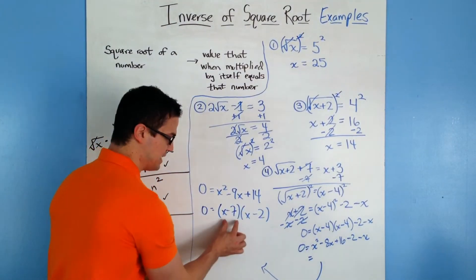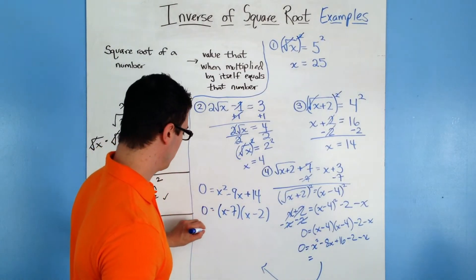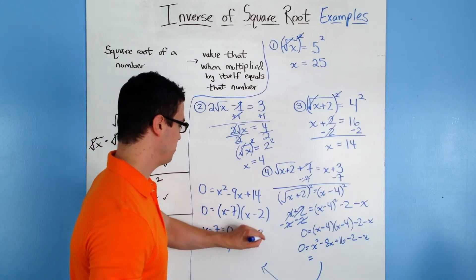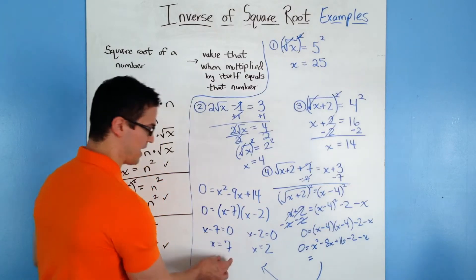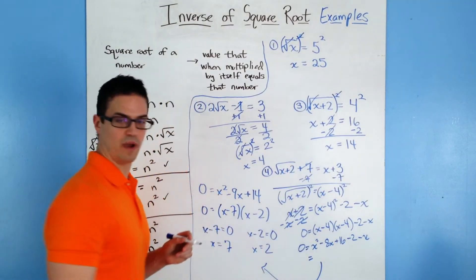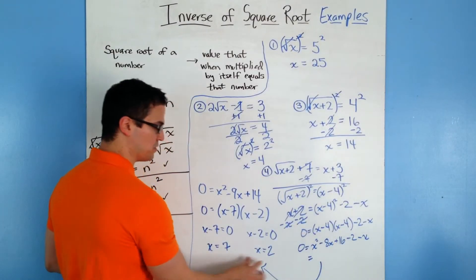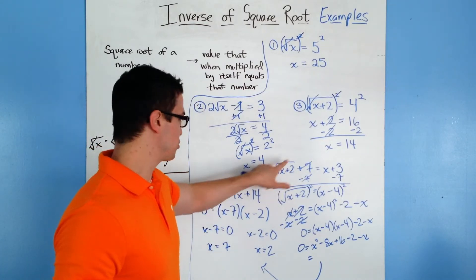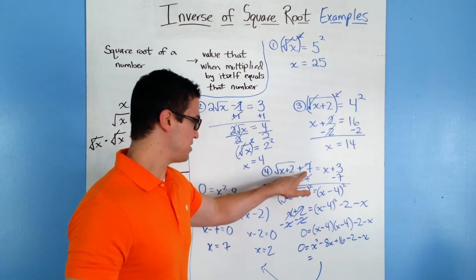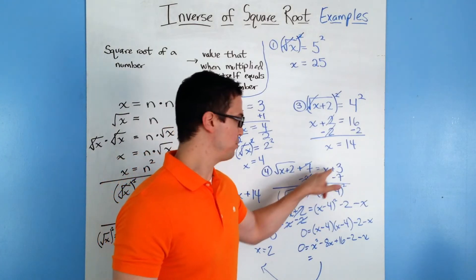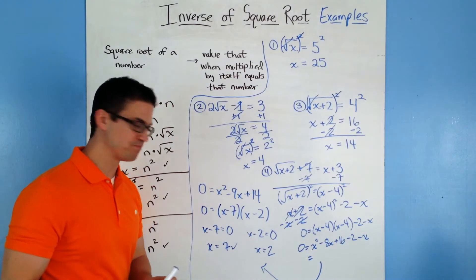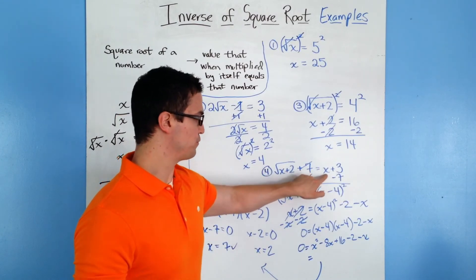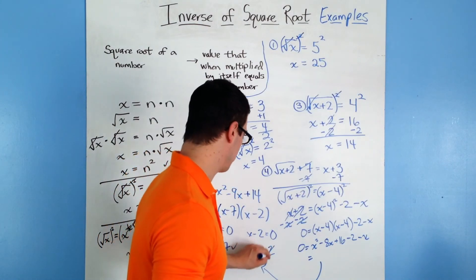Using the zero product property, each factor must equal zero. Setting x minus 7 equal to 0 gives x equals 7, and setting x minus 2 equal to 0 gives x equals 2. We have two possible solutions. Plugging 7 back into the original equation: 7 plus 2 is 9, square root of 9 is 3, plus 7 is 10; and 7 plus 3 is 10 — so 7 works. Trying 2: 2 plus 2 is 4, square root of 4 is 2, plus 7 is 9; but 2 plus 3 is 5, not 9 — so 2 does not work. The answer is only x equals 7.